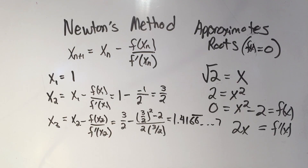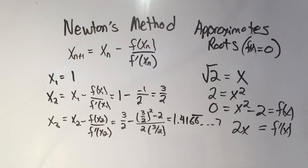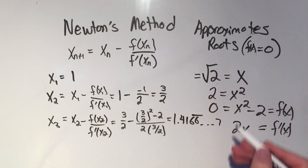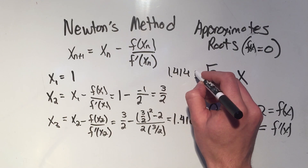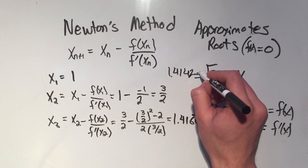That's not too bad, because if I plug the square root of 2 into a calculator — if I can find the square root button — do you ever notice how hard it is just to find the regular things you want on a calculator? If I plug in the square root of 2, I'm getting 1.4142 and then some other stuff.